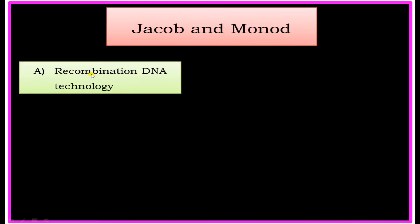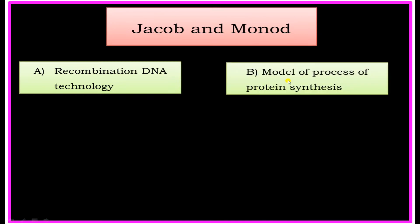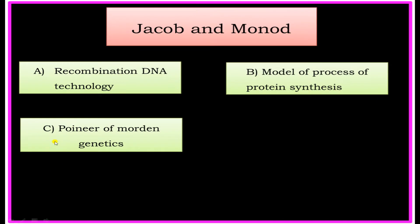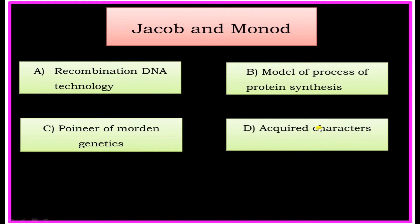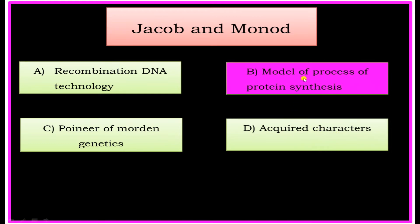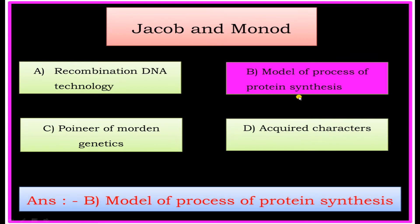Jacobs and Monod. Options: A) Recombination DNA Technology, B) Model of Process of Protein Synthesis, C) Pioneer of Modern Genetics, D) Acquired Characters. The answer is: Model of Process of Protein Synthesis.